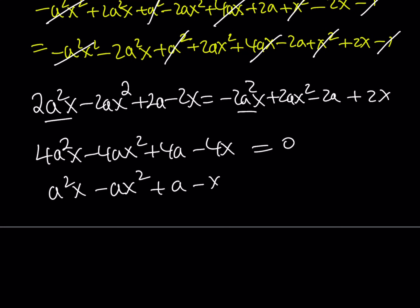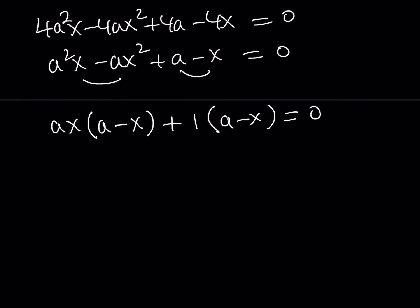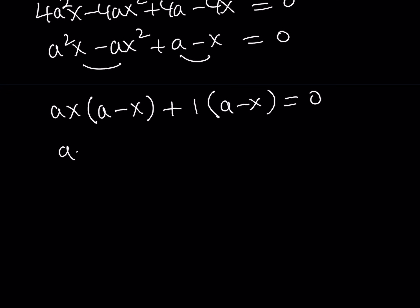And then I'm going to factor. This is going to simplify my expression. Here, I can factor this by grouping. I can take out ax times a minus x. And this can be like 1 times a minus x equals 0. Now from here, I can take out a minus x. And then I'll be getting ax plus 1 as the other factor.